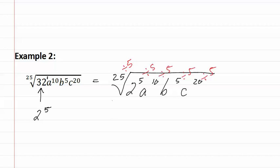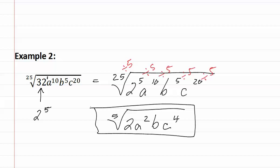This will give us the fifth root of two, a to the second, b and c to the fourth. This is our final answer.